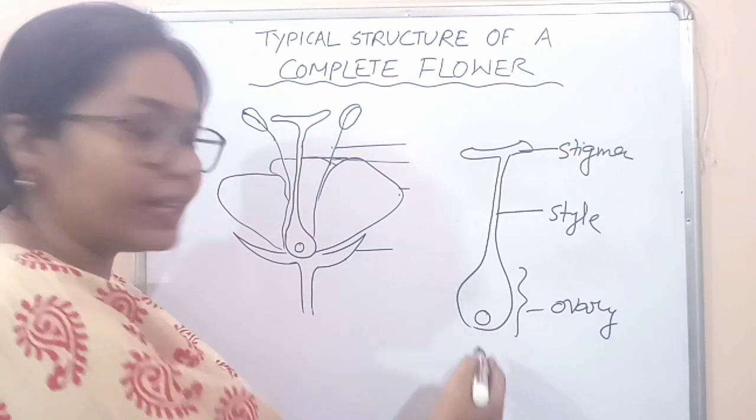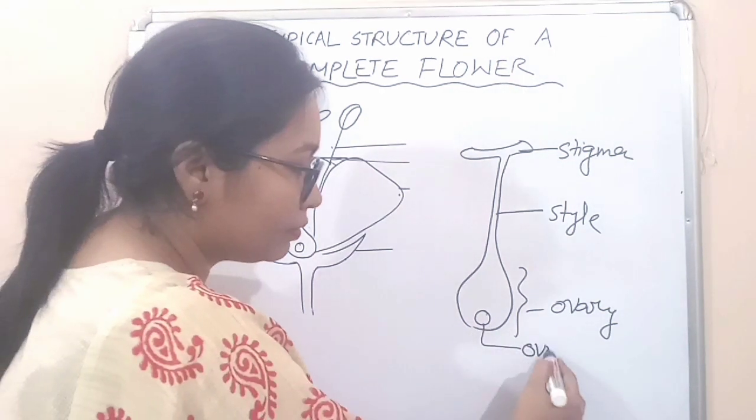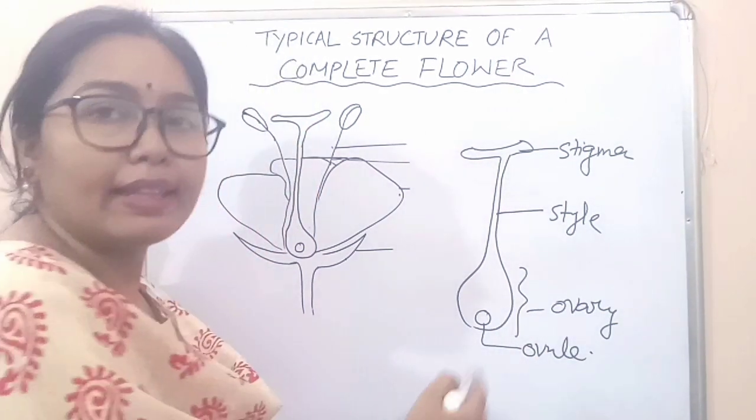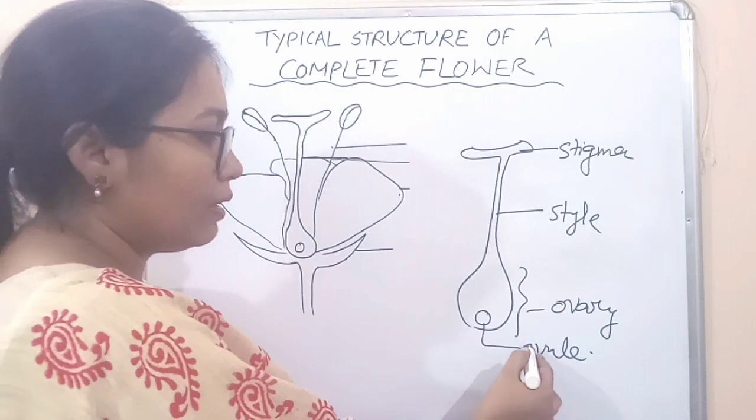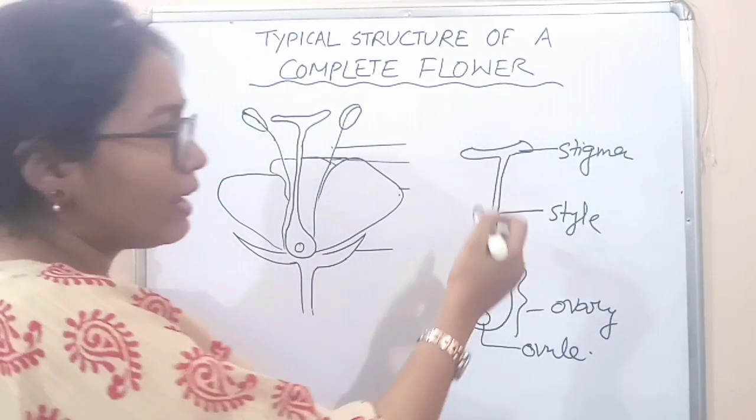Here in the ovary they contain the ovules, and they contain the female gamete.